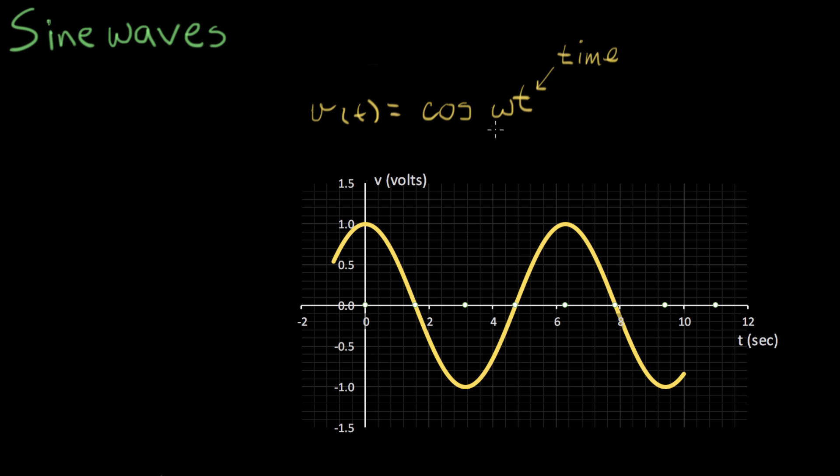Omega has an important job in this. The argument to cosine, whatever is inside the cosine, this has to be dimensionless. This has to have no units. And so if we put in a unit of seconds, that means omega is something that has the units of one over seconds, or one over time.